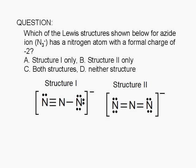Which of the Lewis structures shown below for the azide ion, N3 negative, has a nitrogen atom with a formal charge of negative 2? A. Structure 1 only, B. Structure 2 only, C. Both structures, or D. Neither structure.